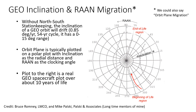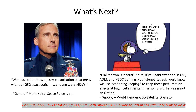So we've seen that there's solar radiation pressure, some odd things in the Earth's gravity that cause stable and unstable points, and the sun and the moon play a role in geosatellite motion.